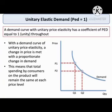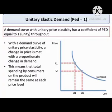Lastly is unitary elastic demand. A demand curve with unitary price elasticity has a coefficient or PED equal to 1 throughout. With a demand curve of unitary price elasticity, a change in price is met with a proportionate change in demand. This means the total spending by consumers on the product will remain the same at each price level. I hope you learned something from me. Thank you for listening!